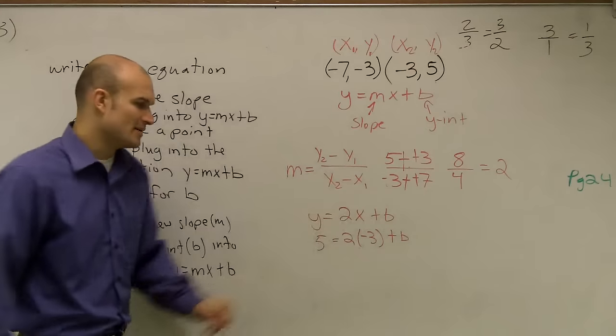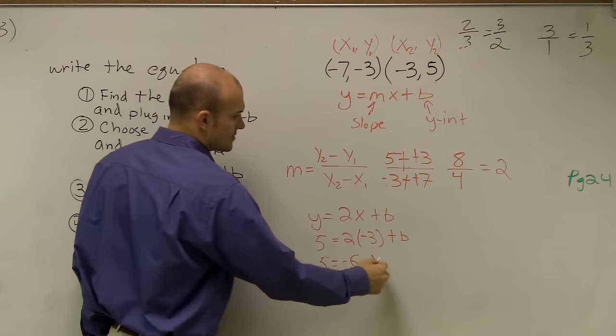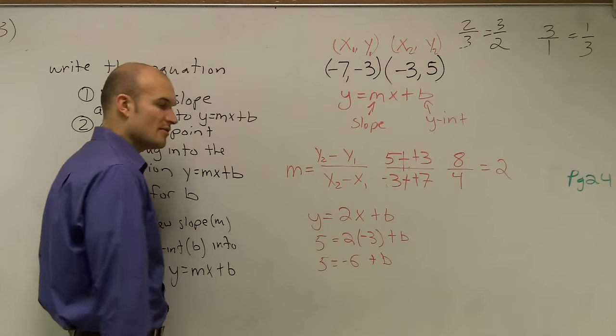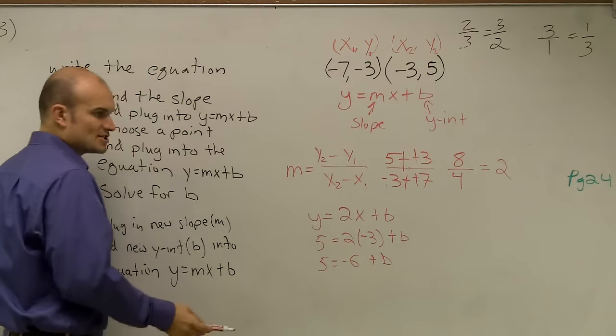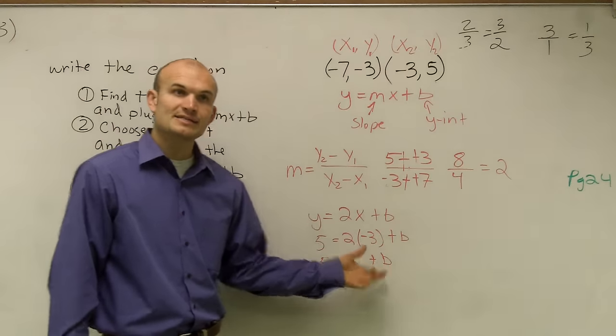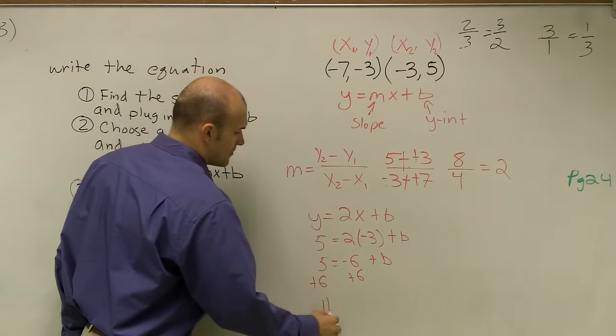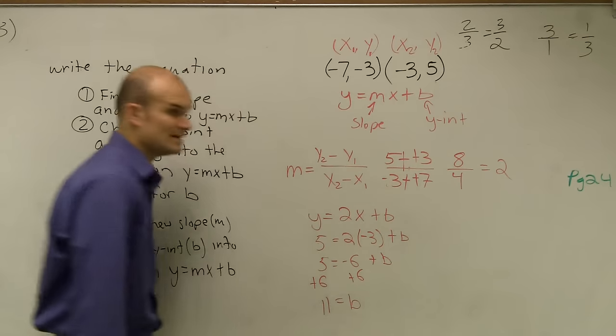Well, I need to solve for b. So first thing I need to do is 2 times negative 3, which is negative 6, plus b. Then to solve for b, I have a negative 6 plus b. So to undo that, I need to add a 6 to both sides. So I have 11 equals b.